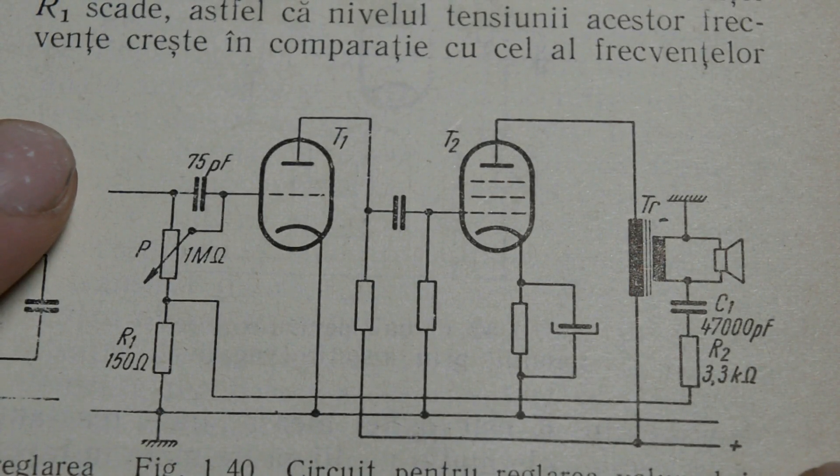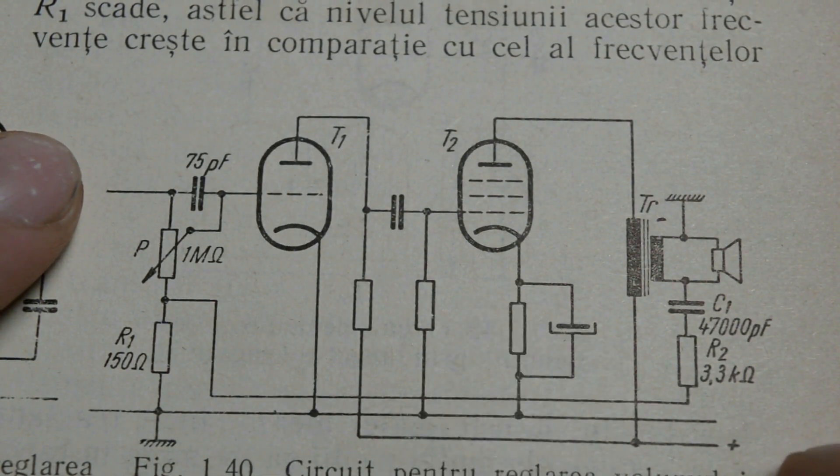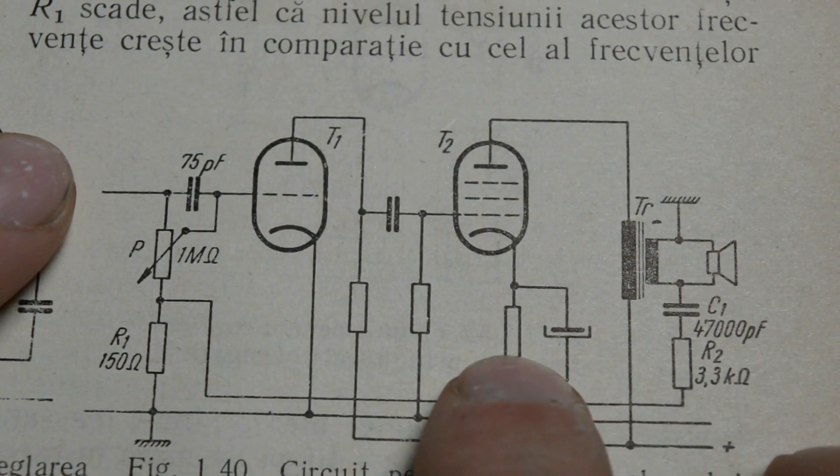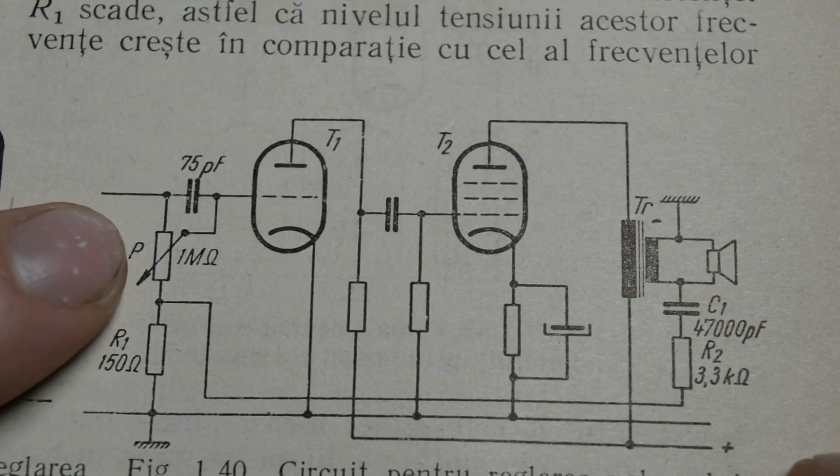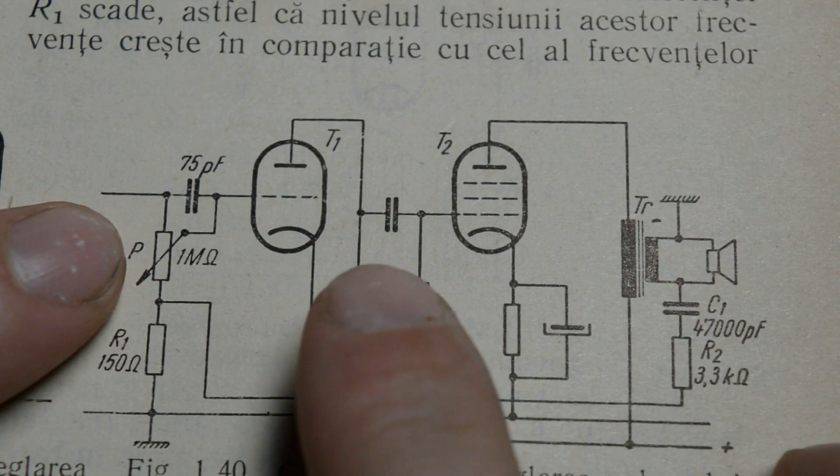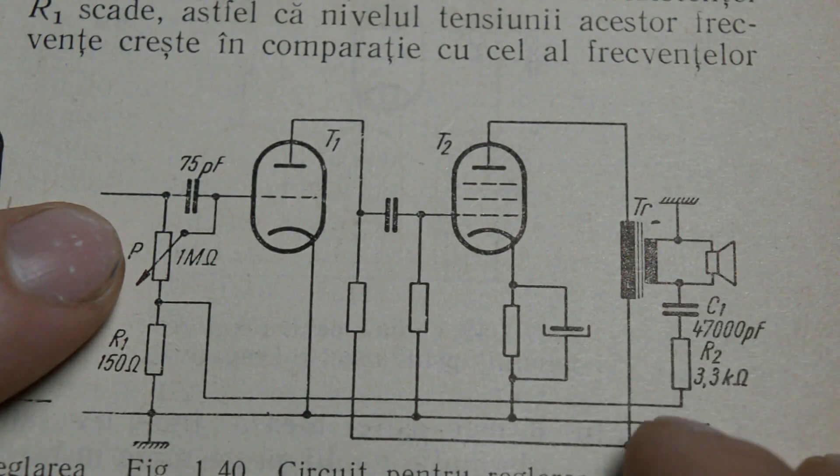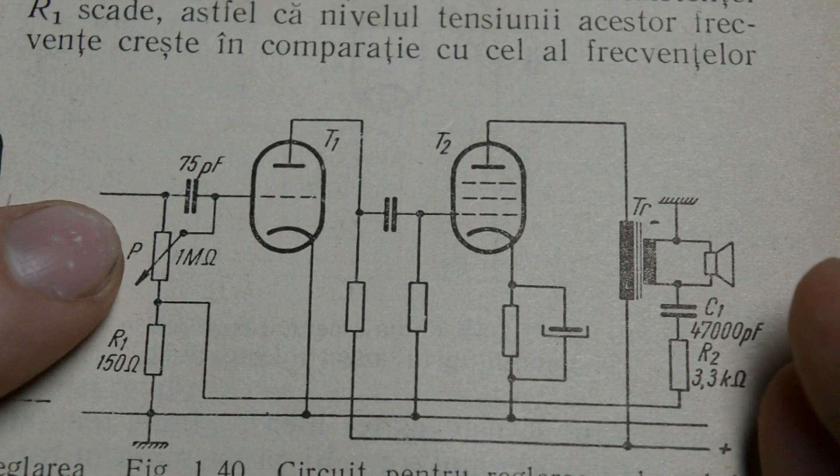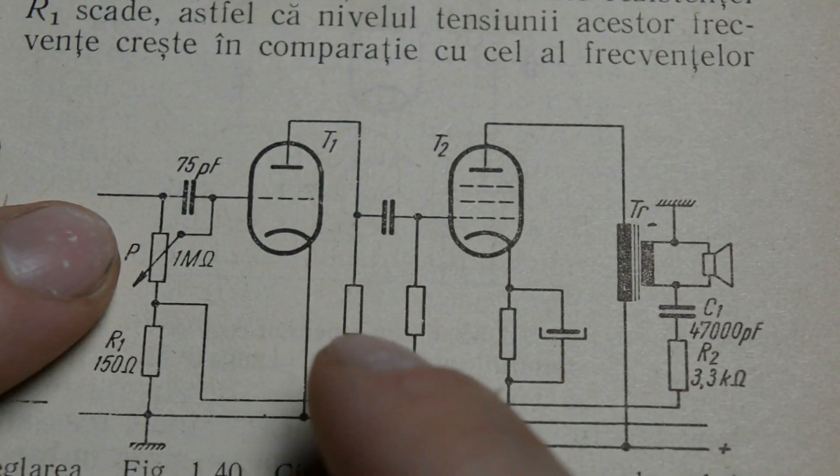The audio amplifier in most tube radios was built something like this. You had two tubes, a triode and a pentode or beam tetrode, in which the triode part was responsible for amplifying the voltage of the input signal. And then the output tube was responsible for driving the speaker through a transformer. The advantage of using the ECL-82 tube is you have both these tubes in the same package.